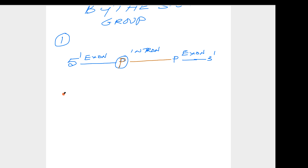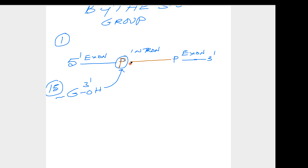Then what will happen? A part of the ribosomal RNA having 15 nucleotides, with the 3-prime end — this portion having 15 nucleotides — will attack at this portion. The 3-prime OH group of guanosine, having 15 nucleotides, attacks the intron's 5-prime end.